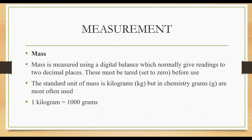Next, how do we measure mass? Mass is measured using a digital balance, which normally gives readings to two decimal places. These must be zeroed — set to zero before use — so we can get accurate readings. The standard unit of mass is kilograms, but in chemistry, grams are most often used. One kilogram equals one thousand grams. For measuring mass, we use an electric top balance, and it measures up to 0.01 grams.